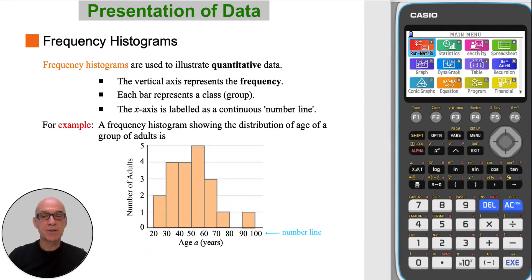Frequency histograms are used to illustrate quantitative data. The vertical axis represents the frequency, and each bar represents a class or a group. However, the x-axis is labelled as a continuous number line. In the example, the frequency histogram shows the distribution of age of a group of adults.